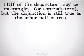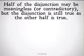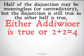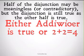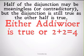Half of the disjunction might be meaningless, contradictory, whatever you want to call it. But the disjunction is still going to be true, as the other half is true. Even if you said a dialetheist is true, or 2 plus 2 equals 4, it seems pretty clear that a dialetheist is not true, but 2 plus 2 equals 4. So the disjunction as a whole is true.